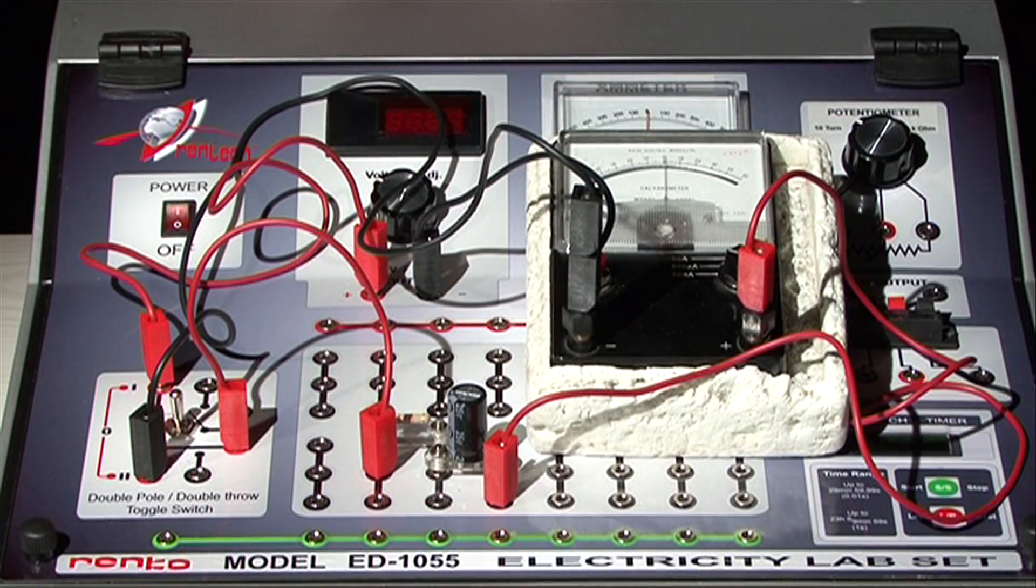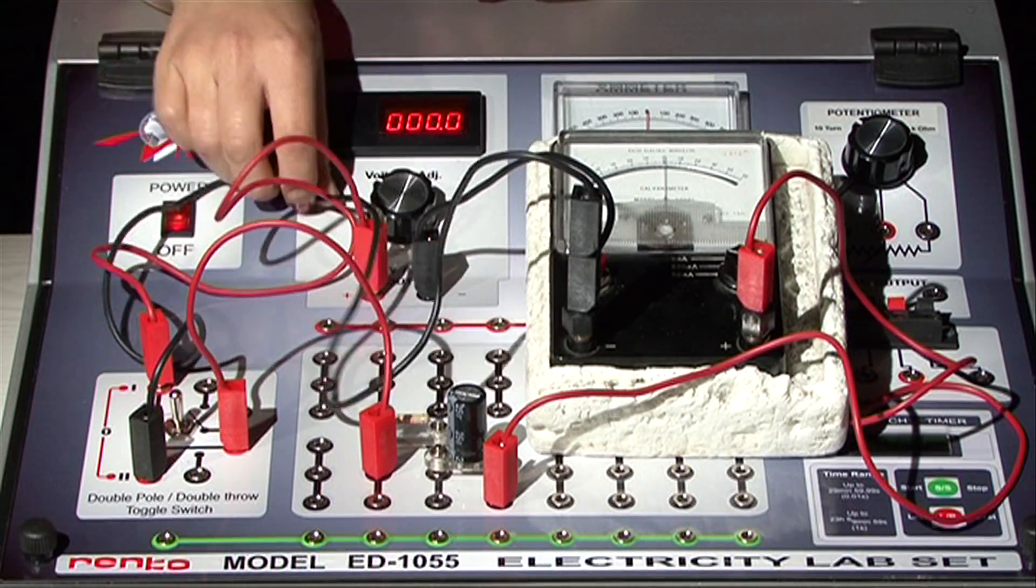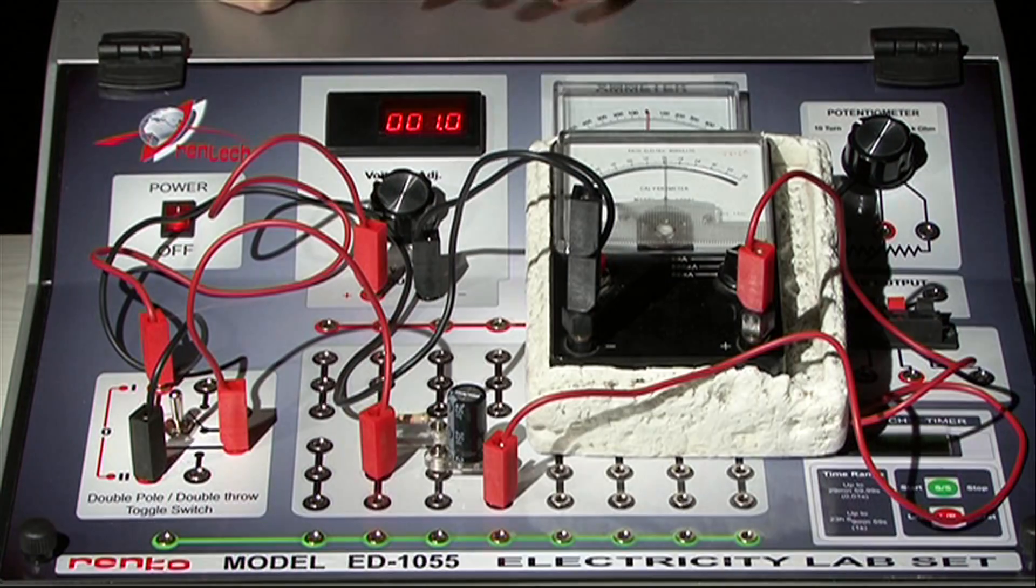You should choose an appropriate output in order to protect the galvanometer. Adjust the output between 1 to 2 volts.